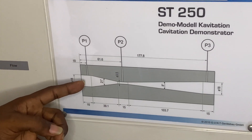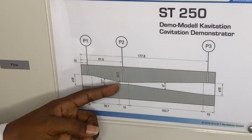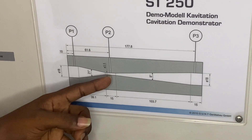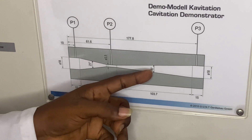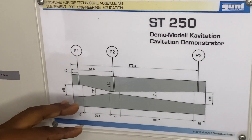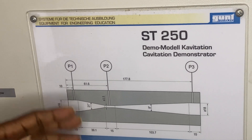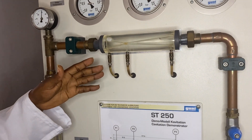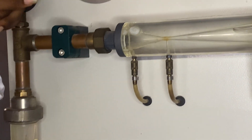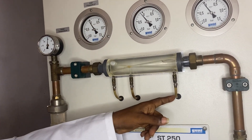The initial point is where we take our first pressure, the inlet pressure. When the fluid moves towards the venturi constriction, we have P2, pressure 2. Then after the constriction the pressure expands and we have P3. Cavitation can be observed due to the manipulation or adjustment in pressure as the fluid flows. We can see P1 inlet pressure, P2 constriction pressure, and P3 outlet pressure.